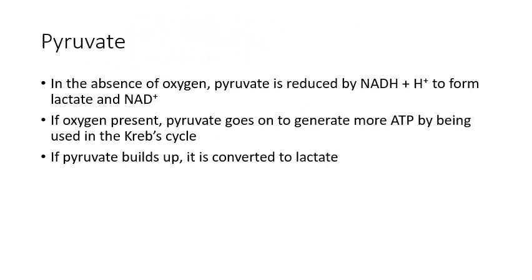What do we do with this pyruvate? If there's no oxygen — anaerobic conditions — pyruvate accepts electrons from the NADH + H⁺ we had earlier, forming lactate and freeing up the NAD coenzyme again. If oxygen is present, the pyruvate is taken into the mitochondrial matrix and used in the Krebs cycle — the citric acid cycle — generating even more ATP.